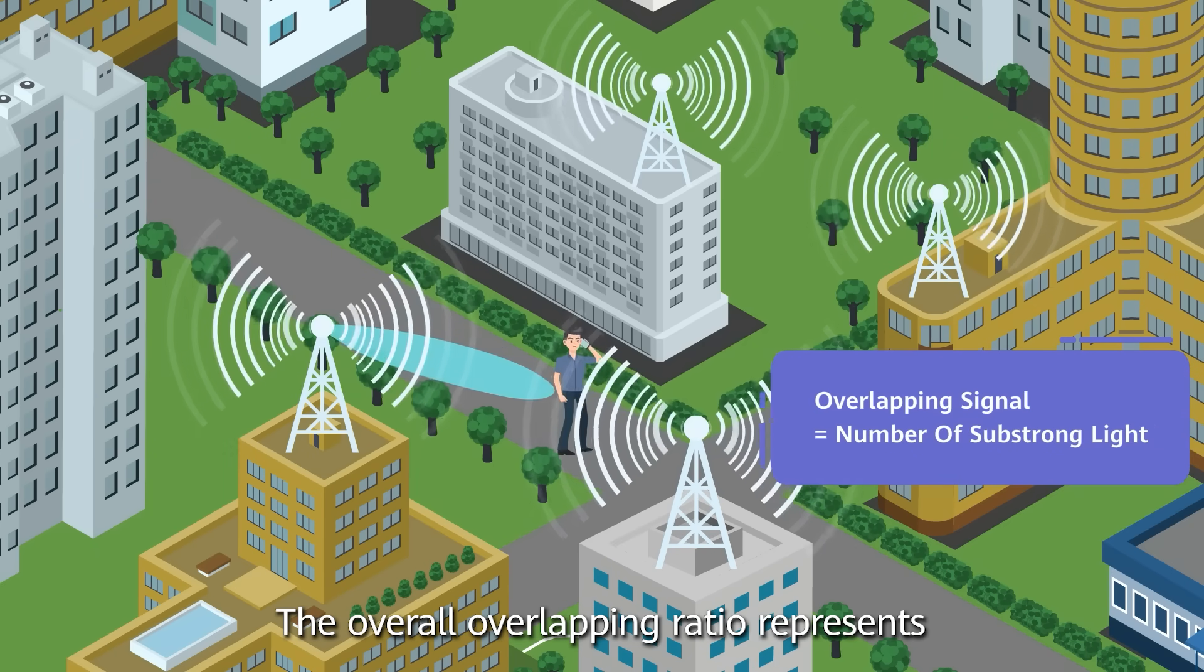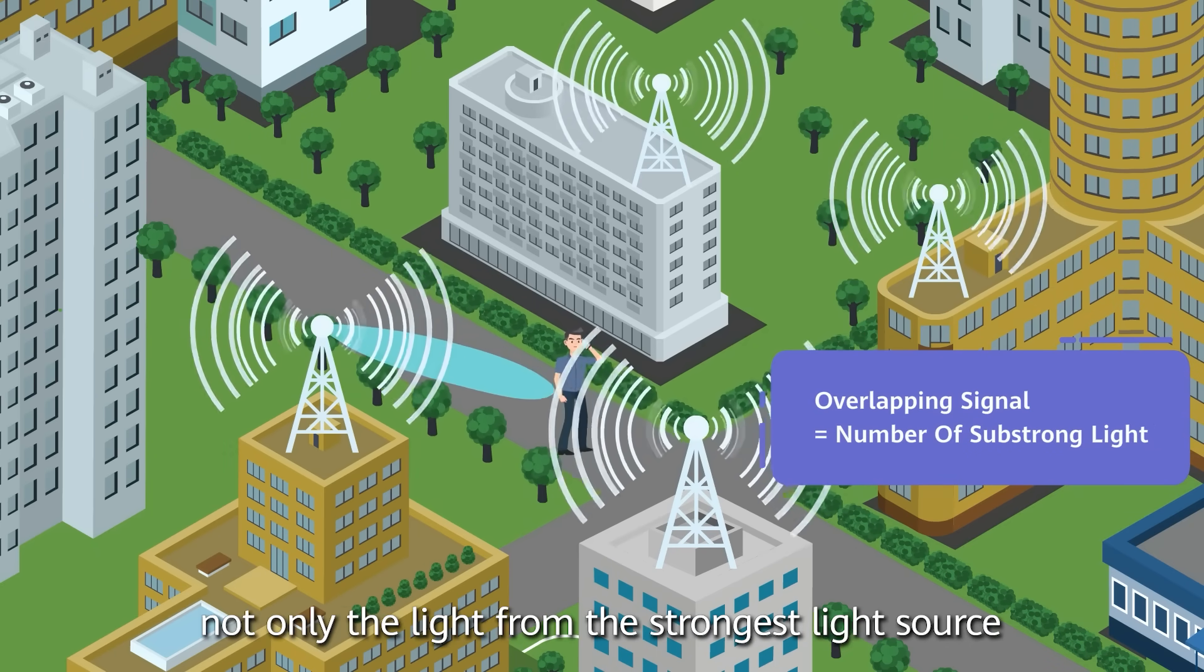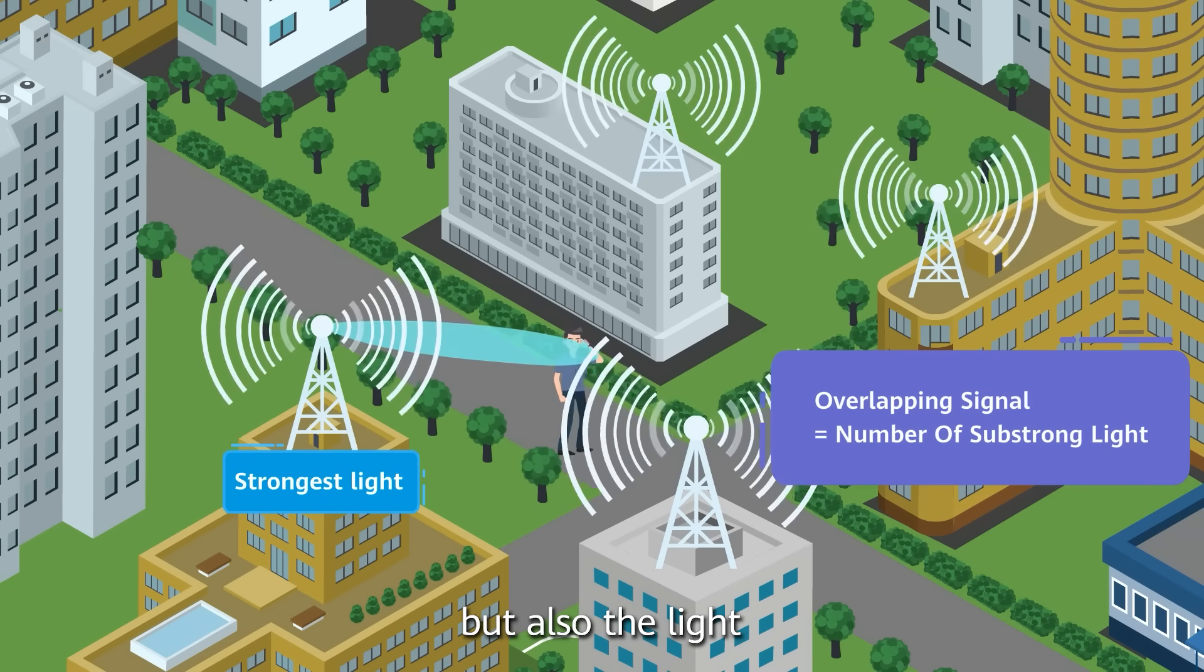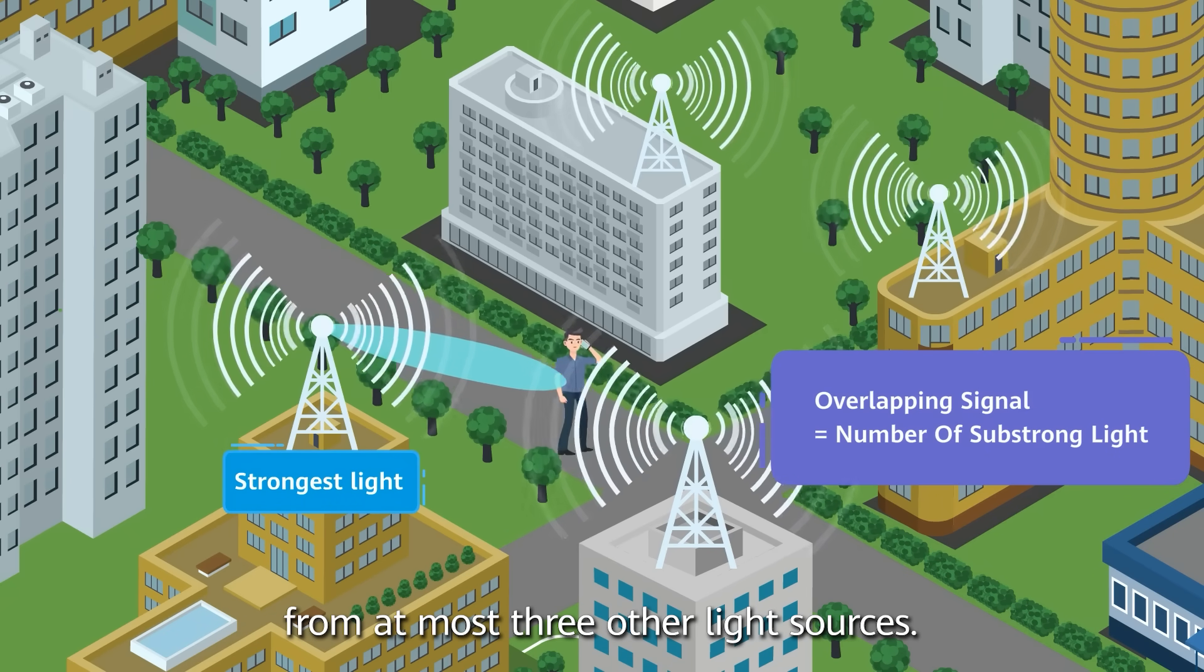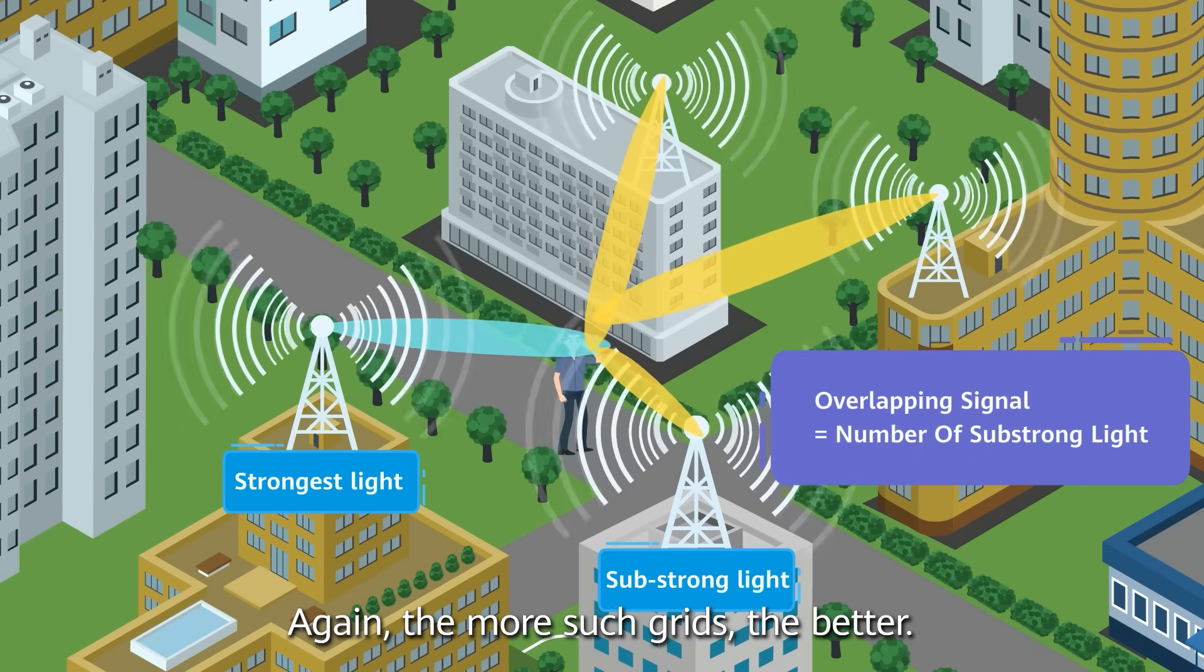The overall overlapping ratio represents in how many grids users receive not only the light from the strongest light source, but also the light from at most three other light sources. Again, the more such grids, the better.